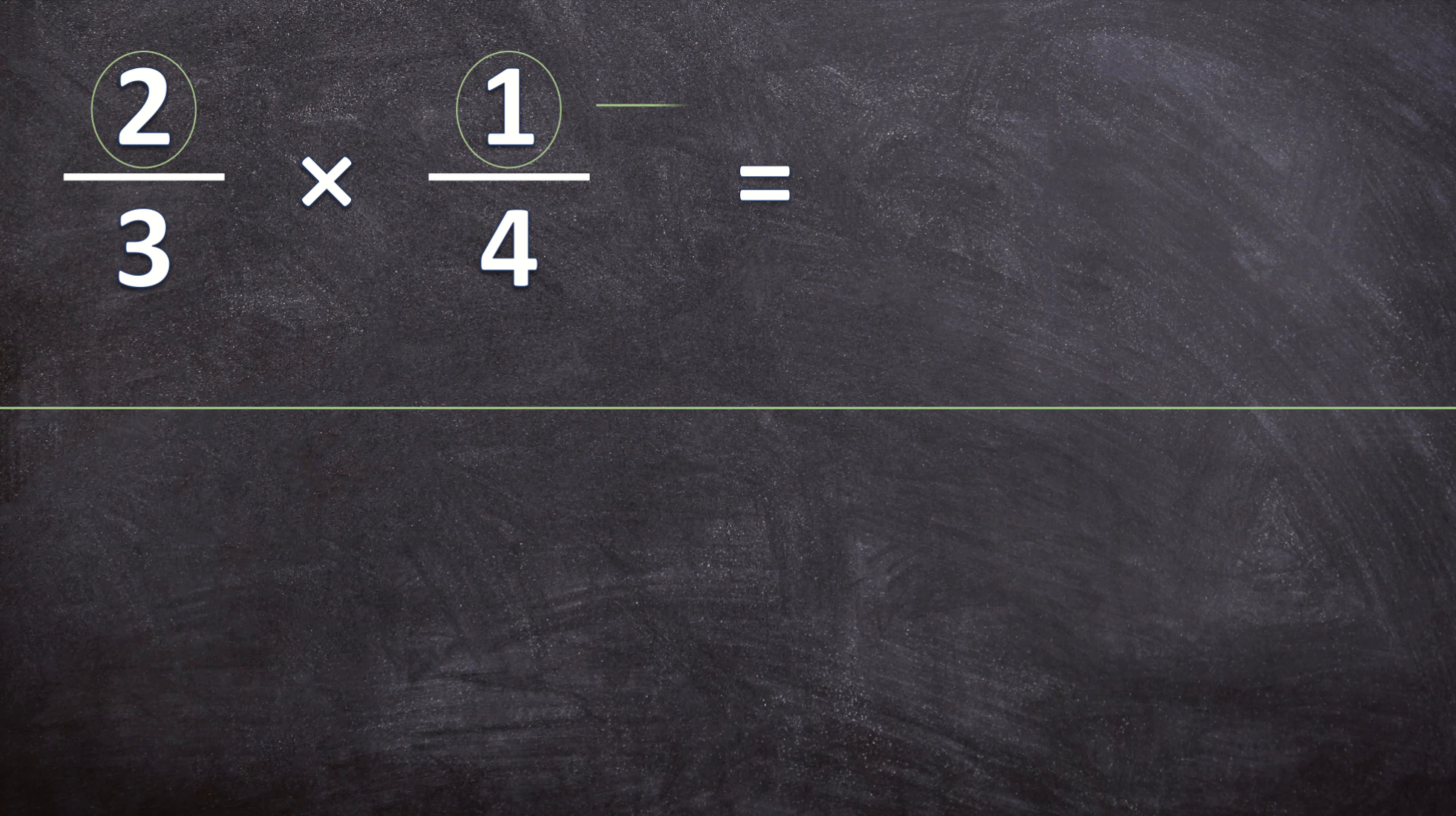So 2 times 1 is 2 over 3 times 4 is 12. But that is not your final answer.